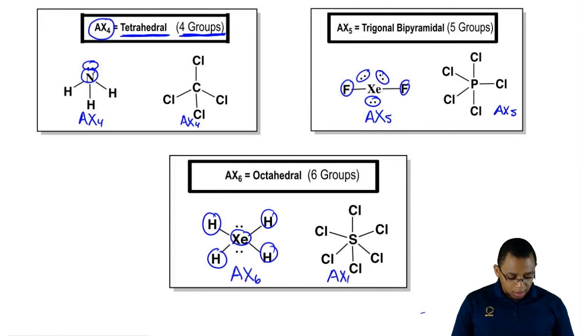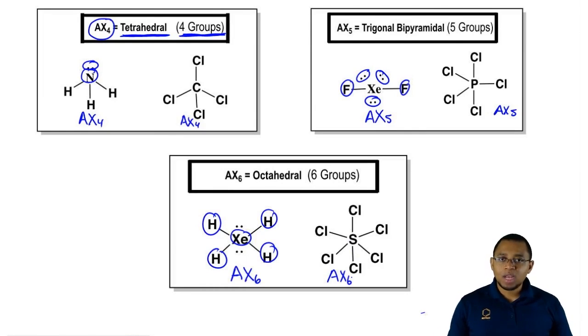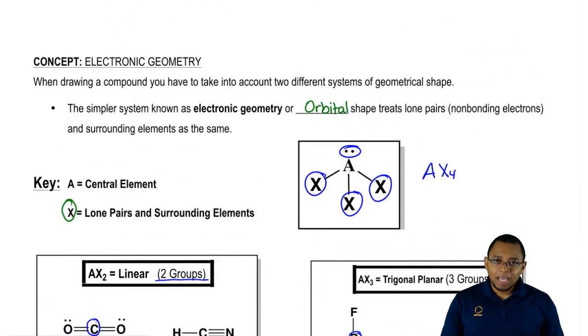What I want you guys to realize is remember, electronic geometry doesn't see a difference between lone pairs around the central element and surrounding elements. It treats them as the same. As long as you can remember the AX system of labeling things, then it becomes that much easier.